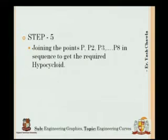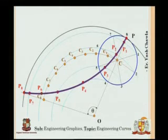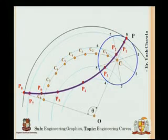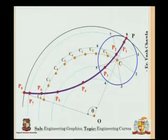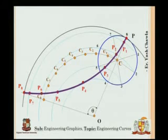Now, I need to join all these points with a smooth curve. Joining points P1, P2, P3 and so on will give my hypocycloid, which lies inside the circle. If the rolling circle keeps on rotating, the curve will continue as shown in the animation at the beginning of the construction.